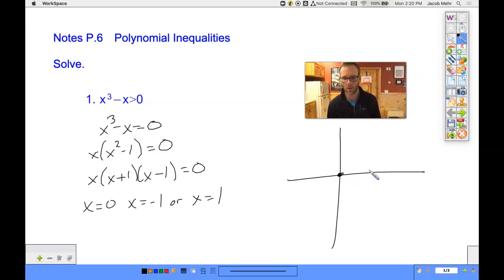Our zeros are zero, one, and negative one. And if I sketch in what this would look like following my end behavior, it has to look something like that.